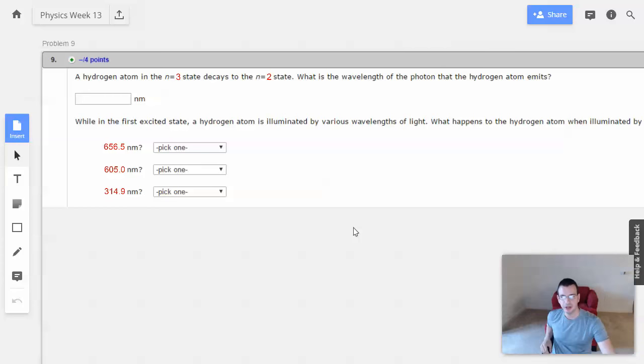Week 13, problem 9. A hydrogen atom in the n equals 3 state decays to the n equals 2 state. What is the wavelength of the photon that the hydrogen atom emits?